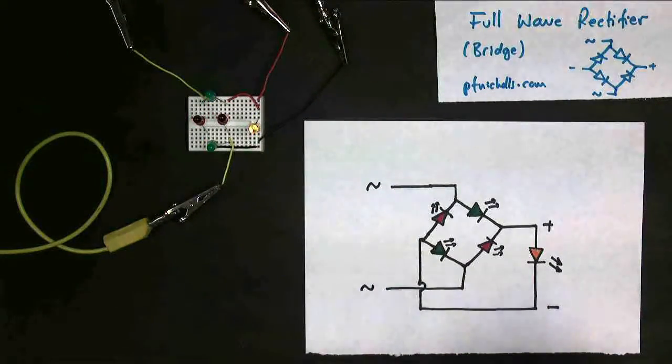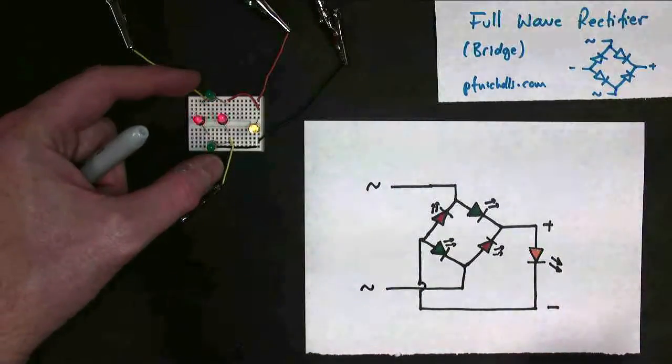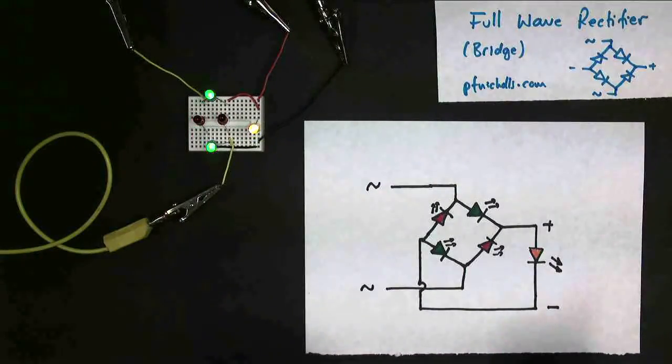Now it's running very slowly, and what you can see is that the LEDs light in pairs, either both the green or both the red. Let's see why that is.